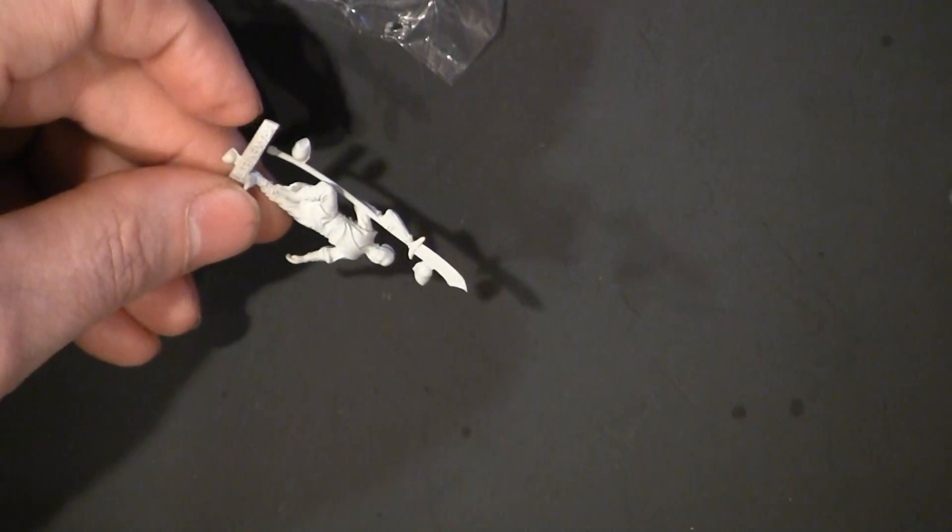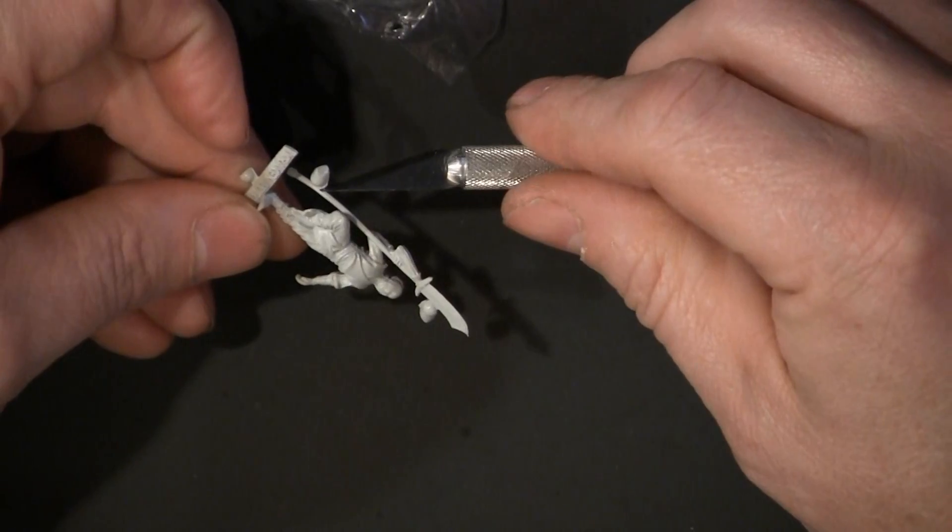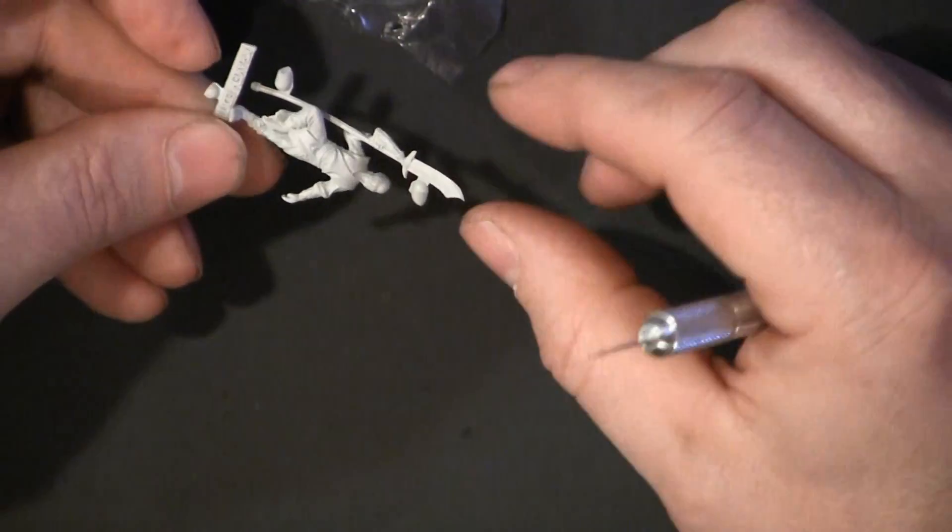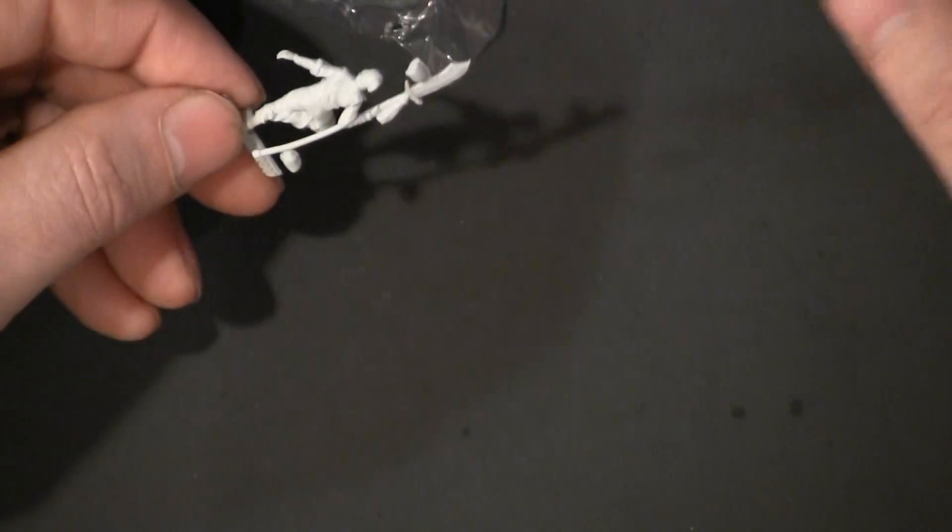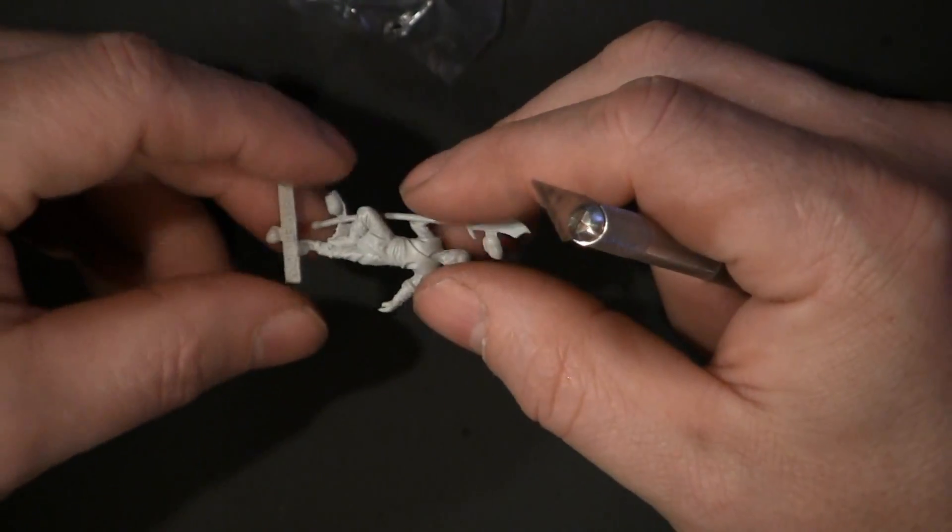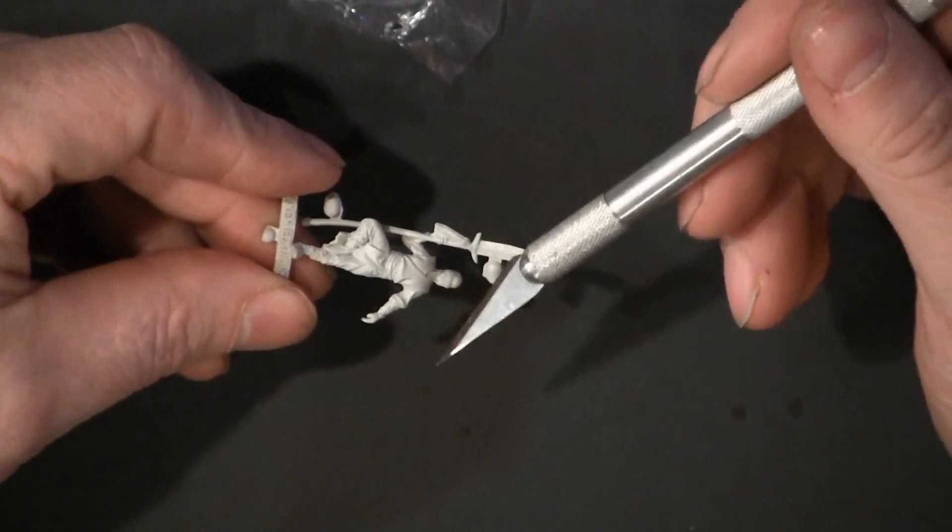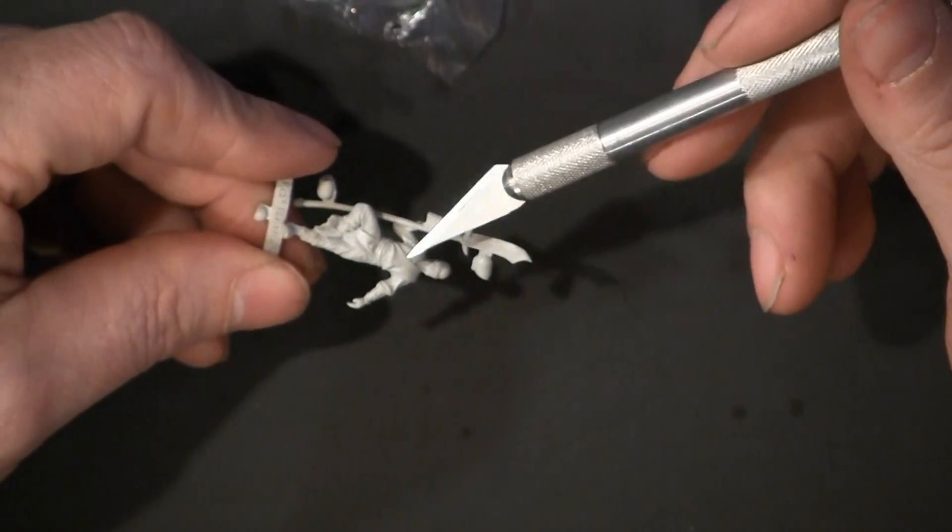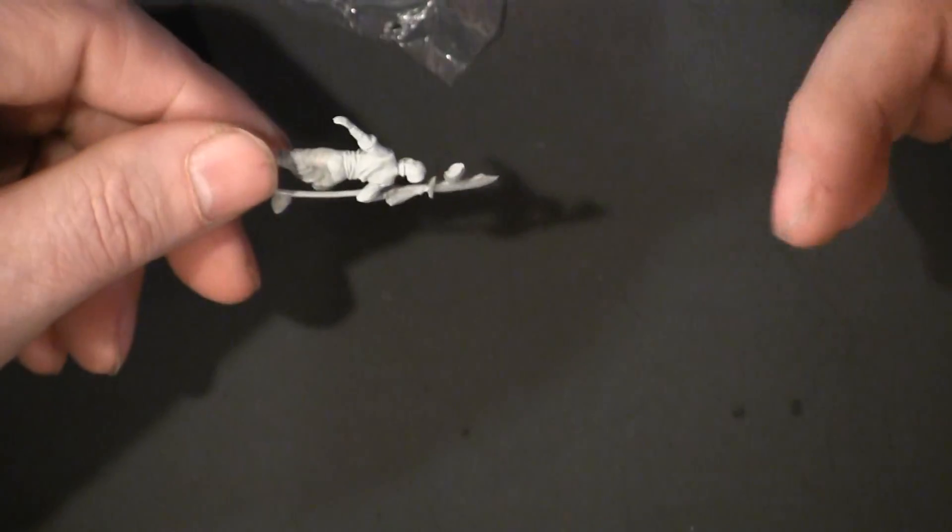And as you can see, there's a little bit of work to do on the sword where they spun it. But again, these figures are going to go together quick. Whether you're a good painter or a beginning painter, this is a good figure to learn on. This is pretty much a dry brush, a couple of washes, a dry brush, a couple of washes, and this guy's done.